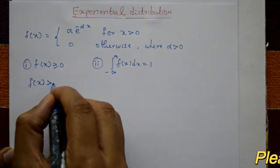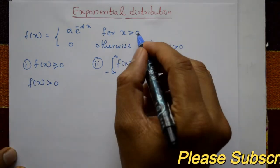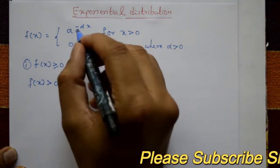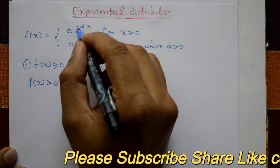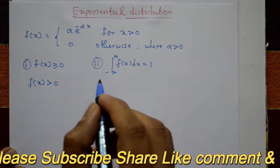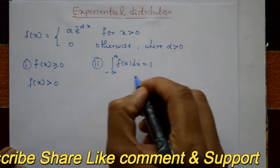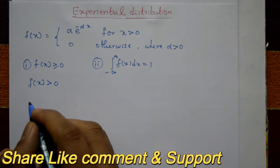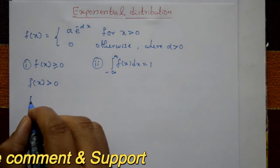The first condition is satisfied: f(x) is greater than zero when x is greater than zero, since f(x) = α·e^(−αx) is positive. So the first condition is satisfied. Now we check the second condition.